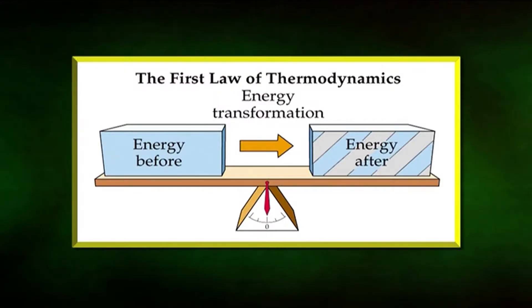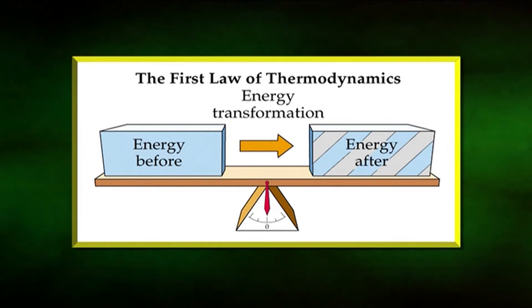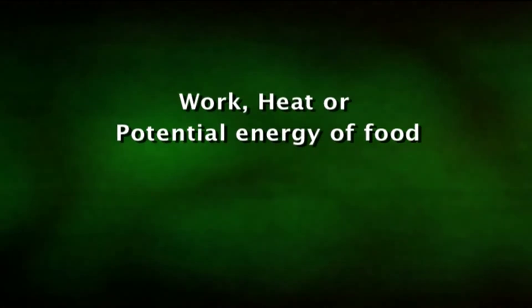Physical laws govern energy flow in ecosystems. The behavior of energy in an ecosystem follows the laws of thermodynamics. The first law of thermodynamics, or the law of conservation of energy, states that energy may be transformed from one form into another but is neither created nor destroyed. Light, for example, is a form of energy. It can be transformed into work, heat, or potential energy of food depending on the situation, but none of it is destroyed.